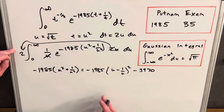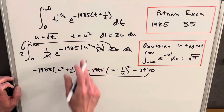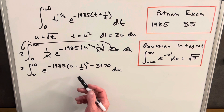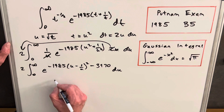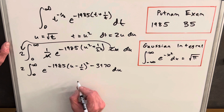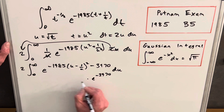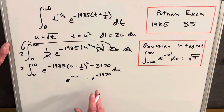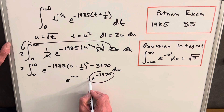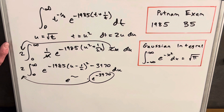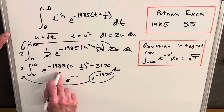When we rewrite this integral, we take the squared piece as our exponent. Because we're subtracting 3970 in the exponent, we can split this out as a separate factor: e to the minus 3970 times the rest. Since that is just a constant, we bring it in front of the integral, leaving a cleaner integrand.